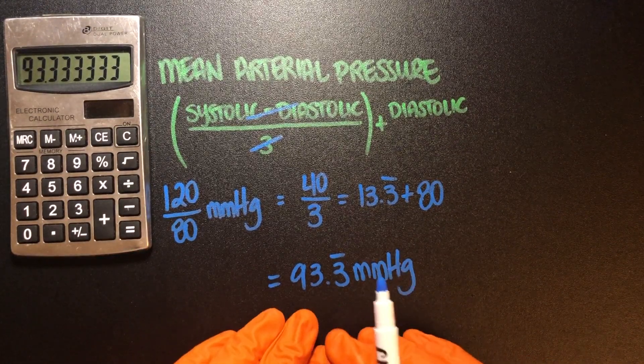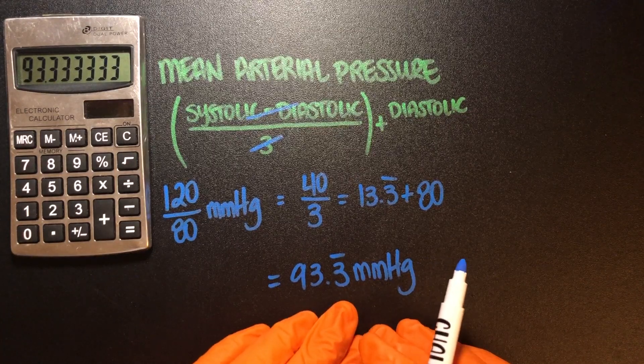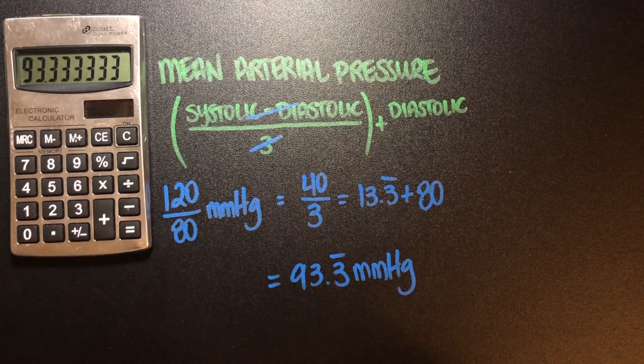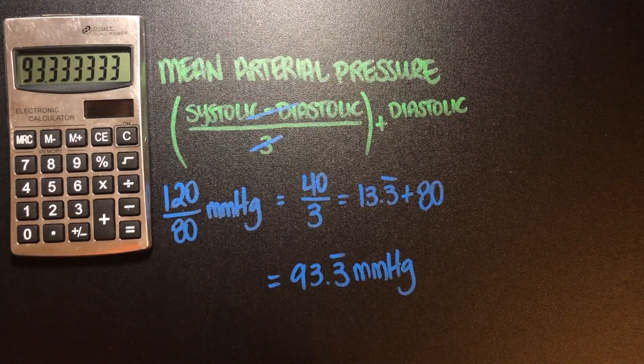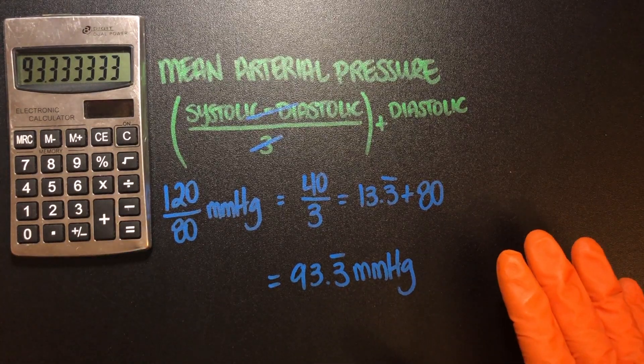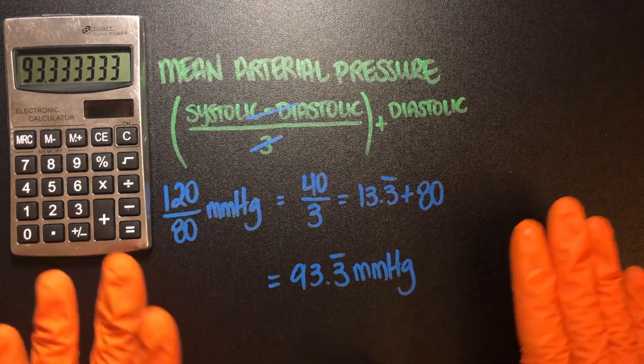So this MAP of 93.3 millimeters of mercury is a good number. Clinically a number anywhere between 70 and about 110 millimeters of mercury is really good.